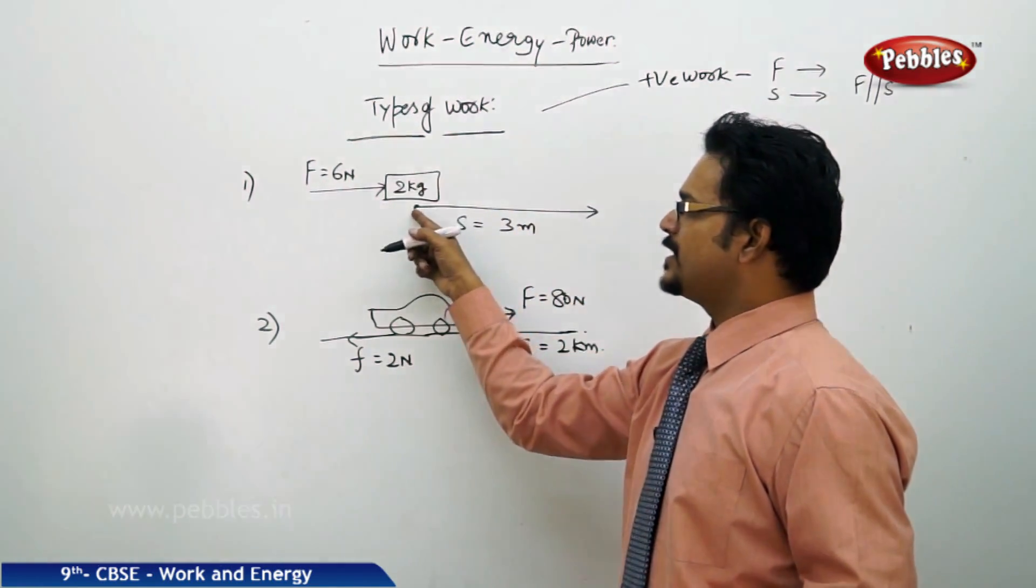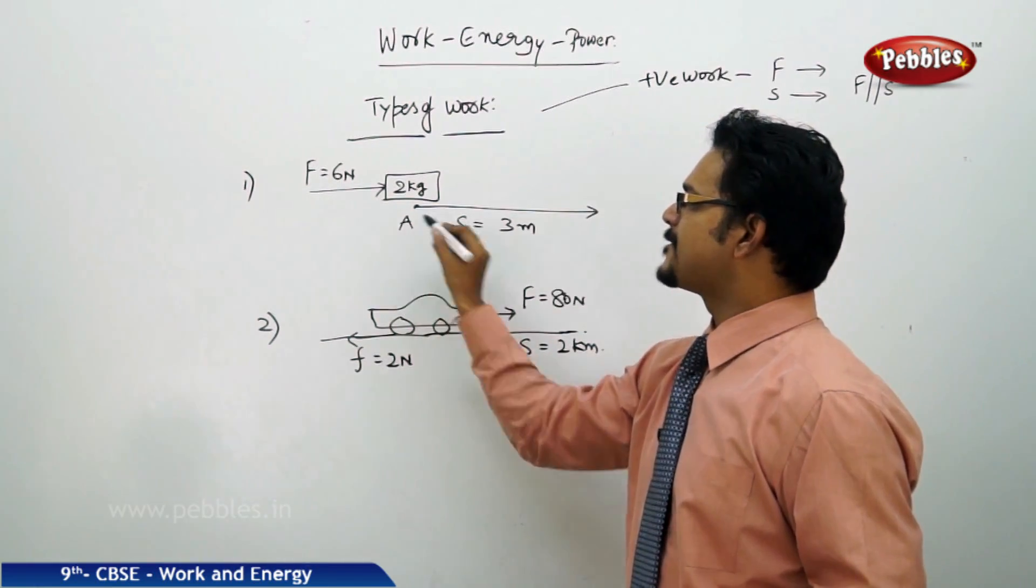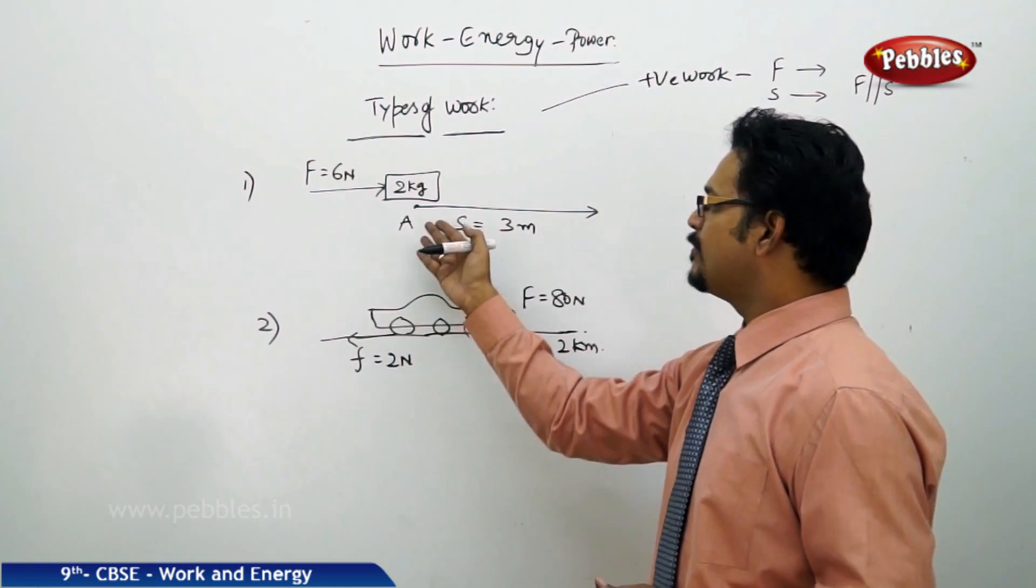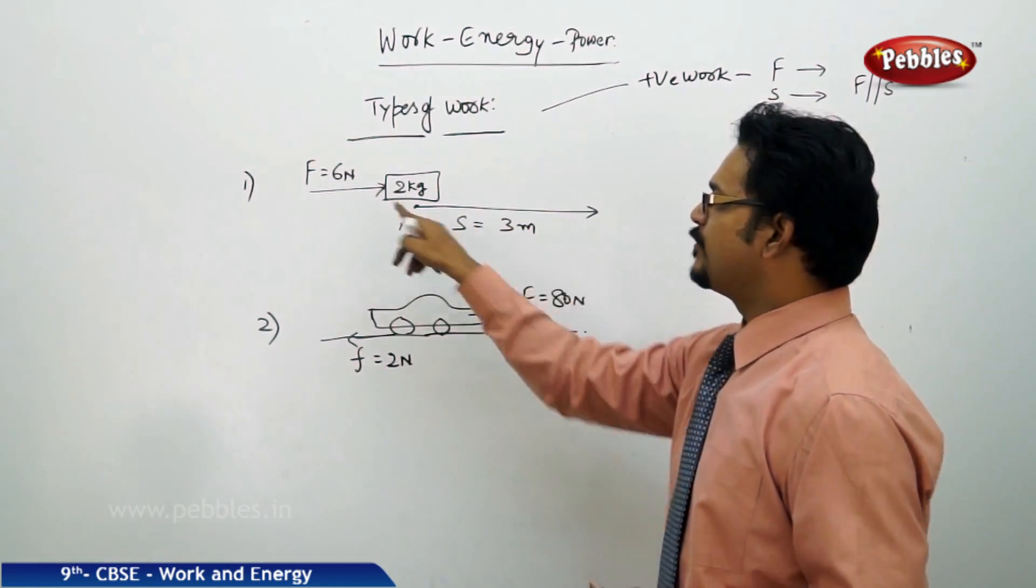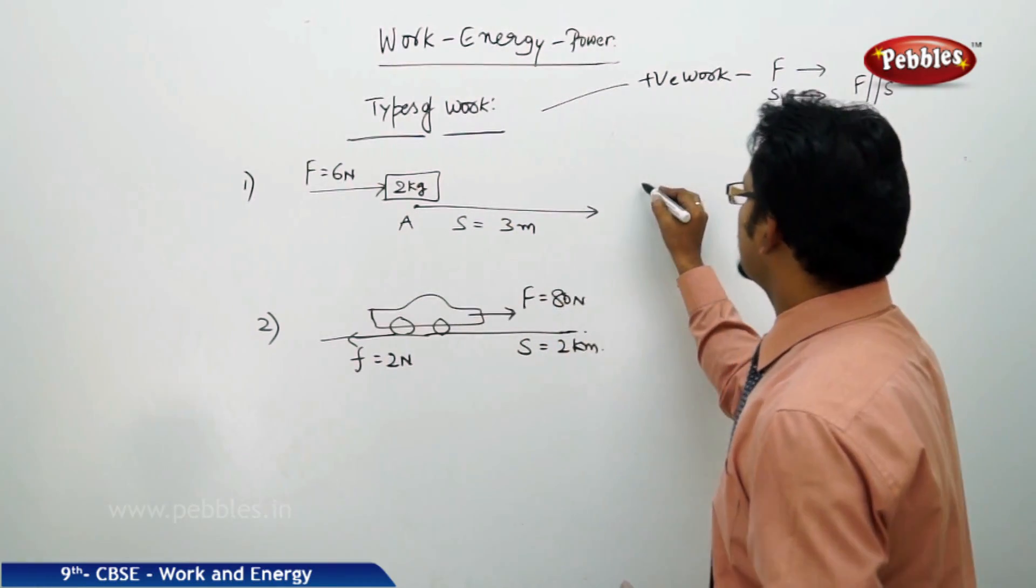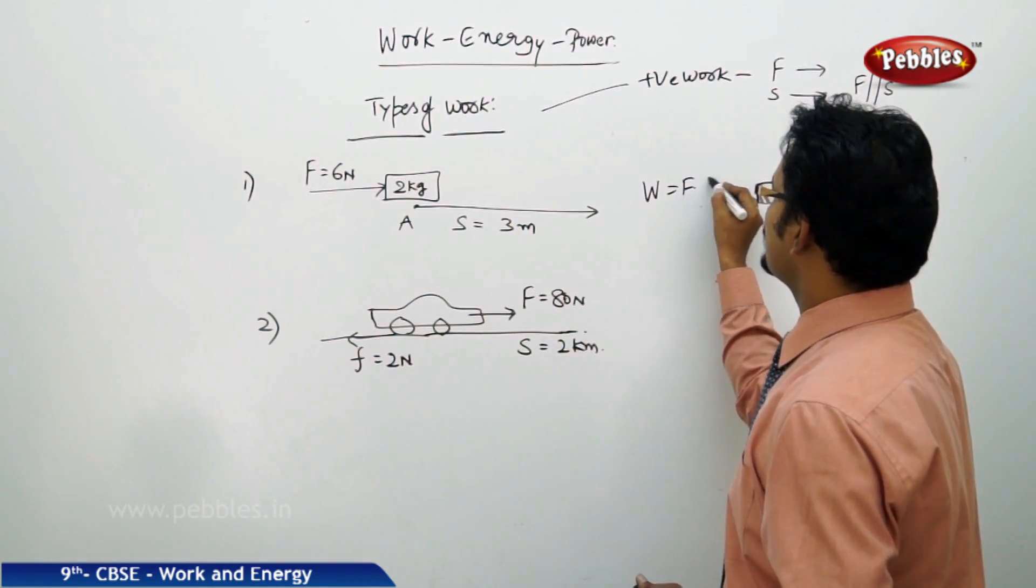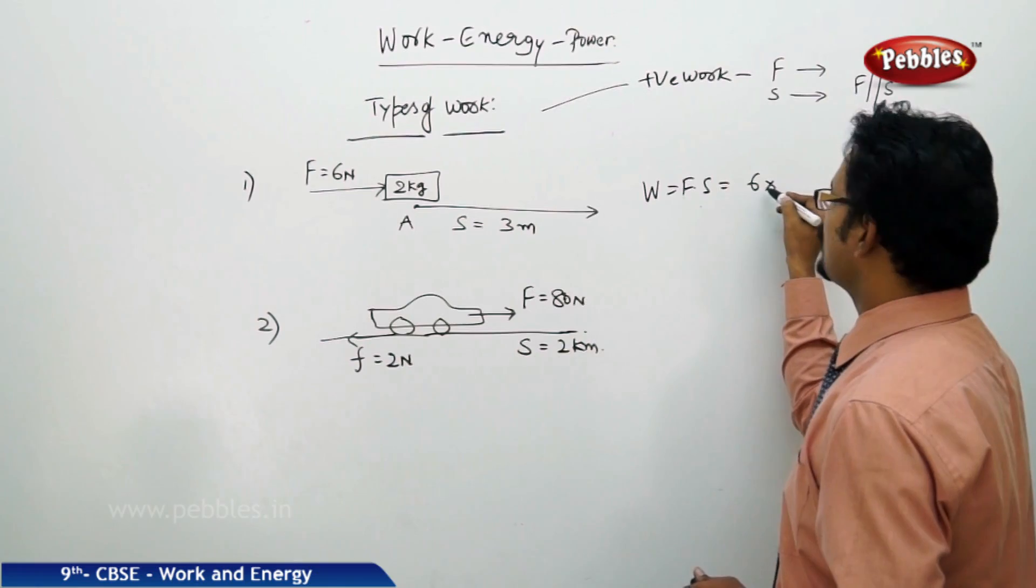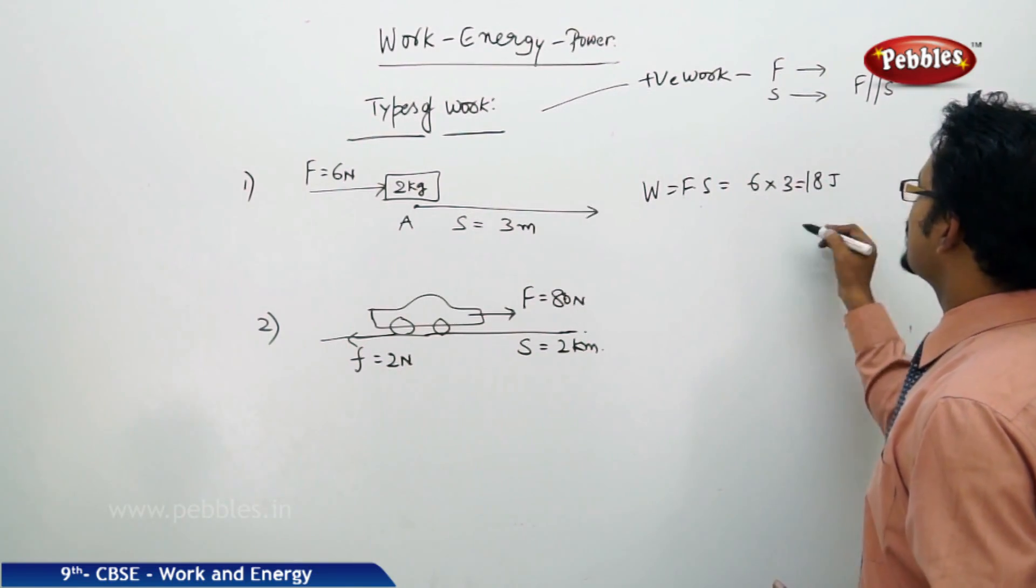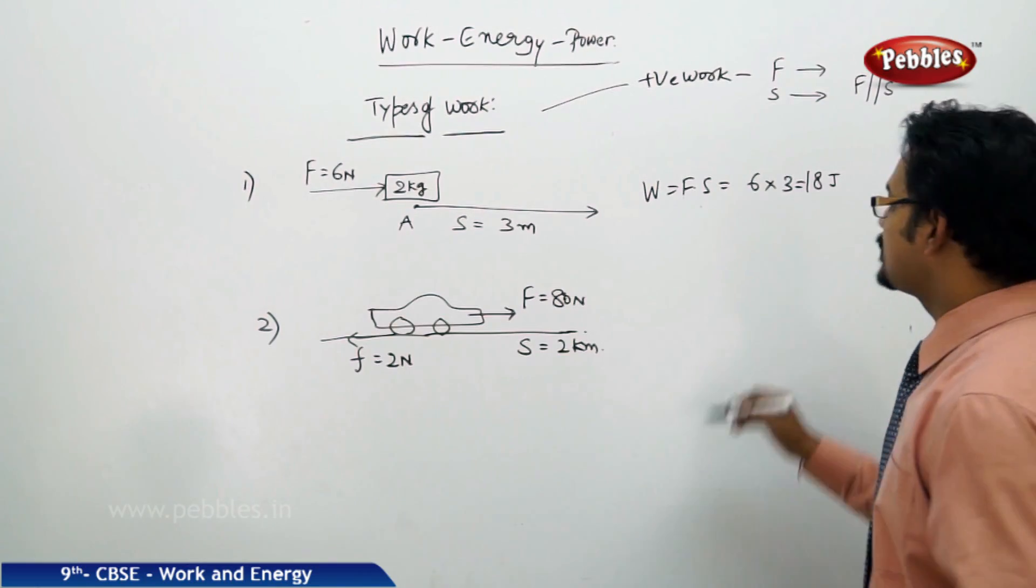See this example here. A body of mass 2 kg at this point A. A force 6 Newton applied on it and the body moves in the same direction. So force direction, body direction are same. Then the work done W equals to F into S, which is 6 into 3, 18 joules is the positive work. It is positive work.